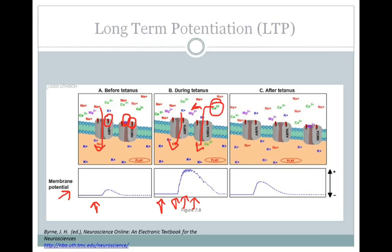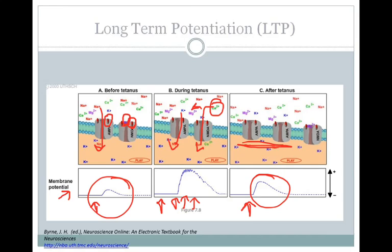If you wait a little while and then give another single stimulus from your presynaptic cell, you'll get an increased EPSP on the postsynaptic cell compared to before your tetanic stimulation. One of the reasons this occurs is that the calcium signaling cascade increases the number of AMPA receptors on the cell membrane.